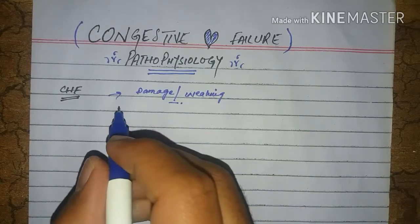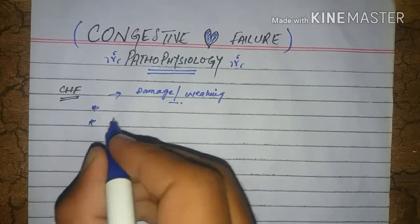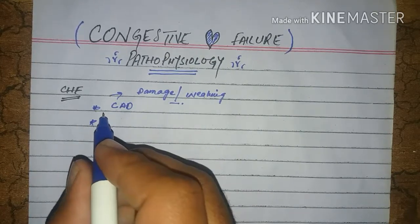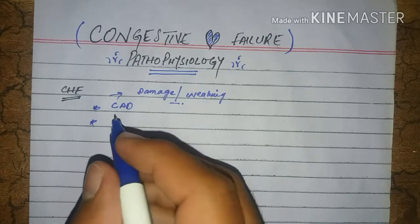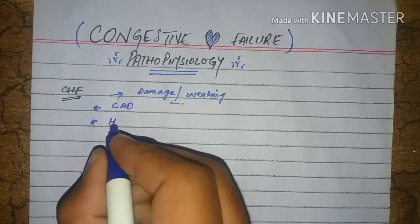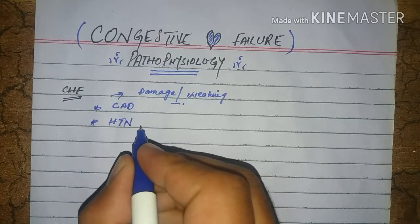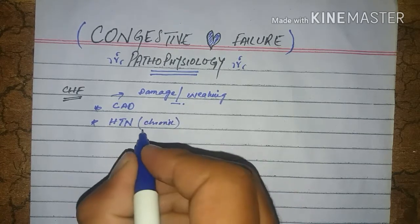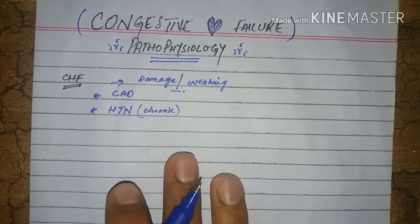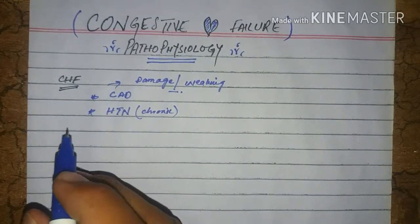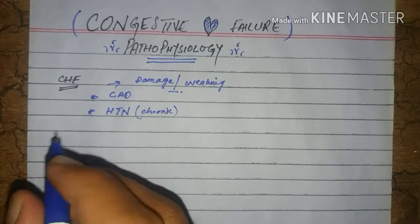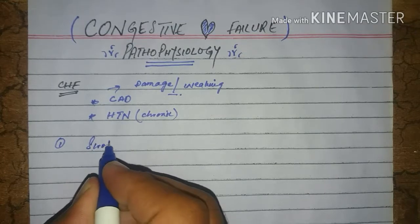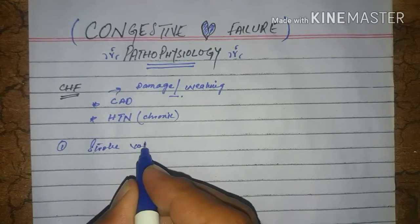Why does weakening or damage of heart muscle occur? There are two reasons: number one is due to coronary artery diseases, that is clogged arteries or fatty deposition in the heart arteries, and the other one is hypertension, that is chronic long-term hypertension.